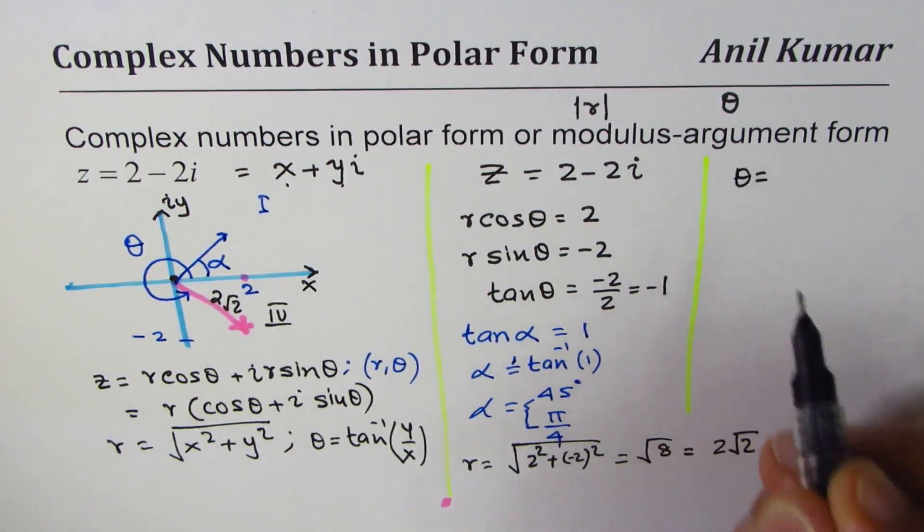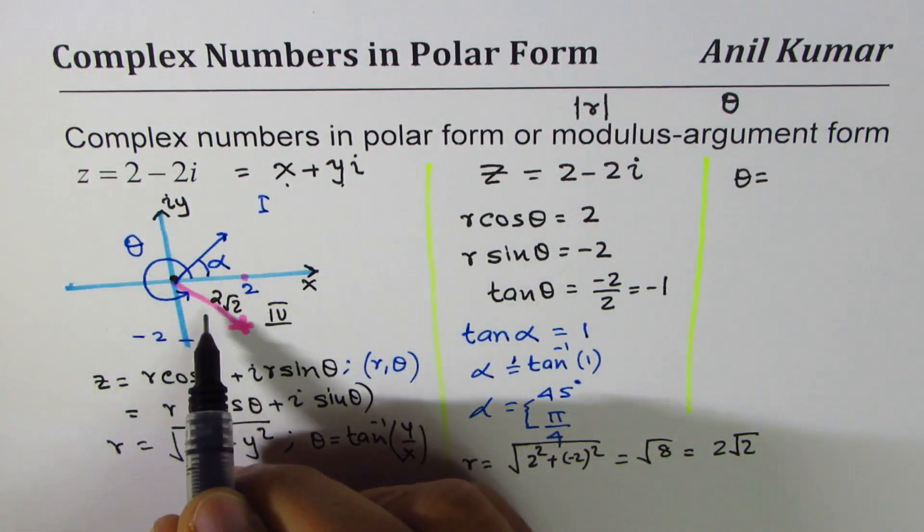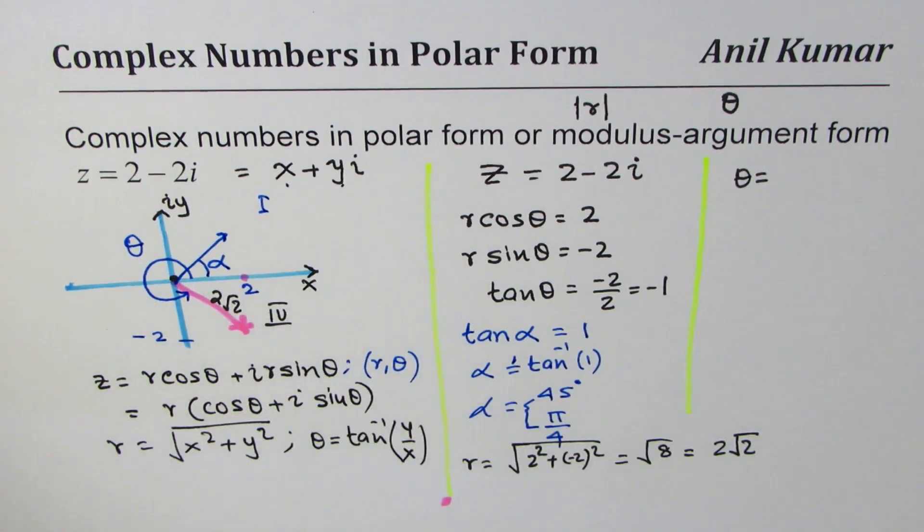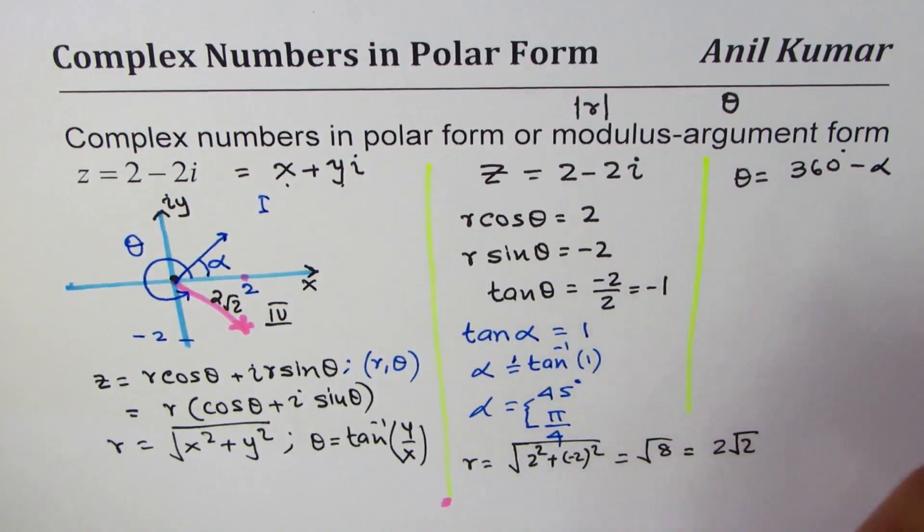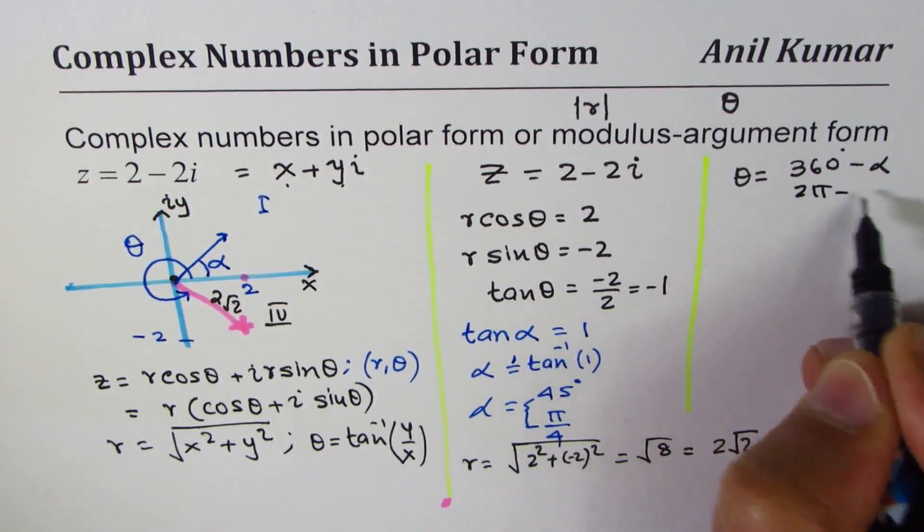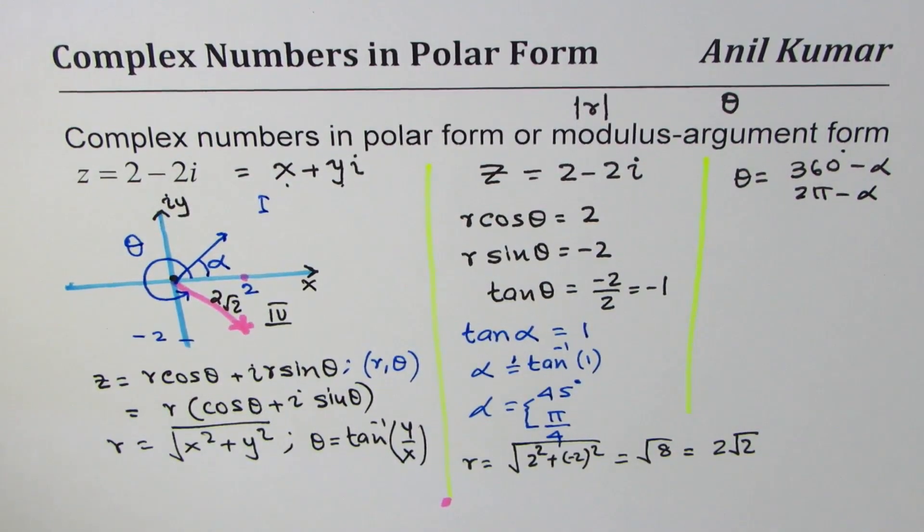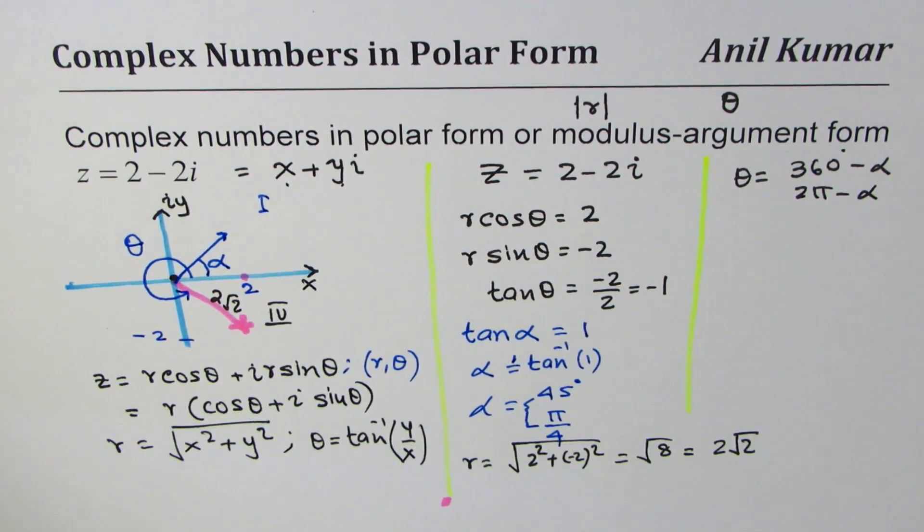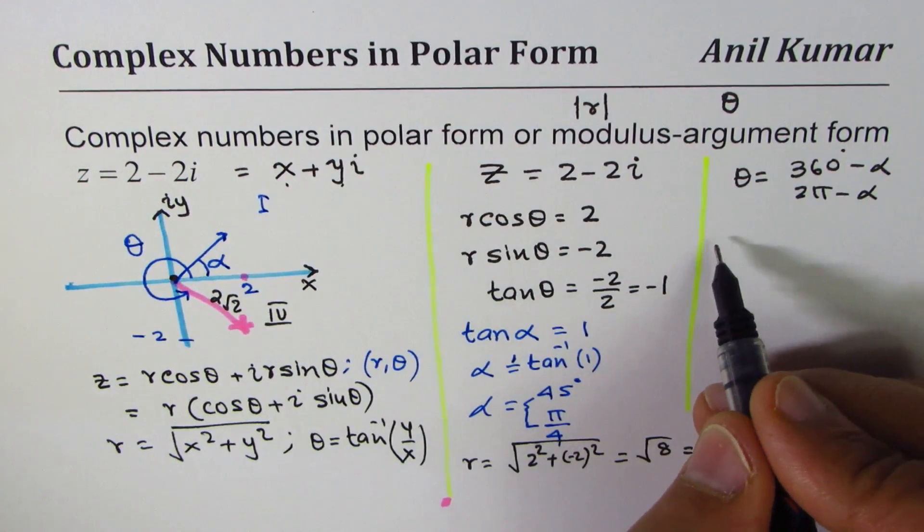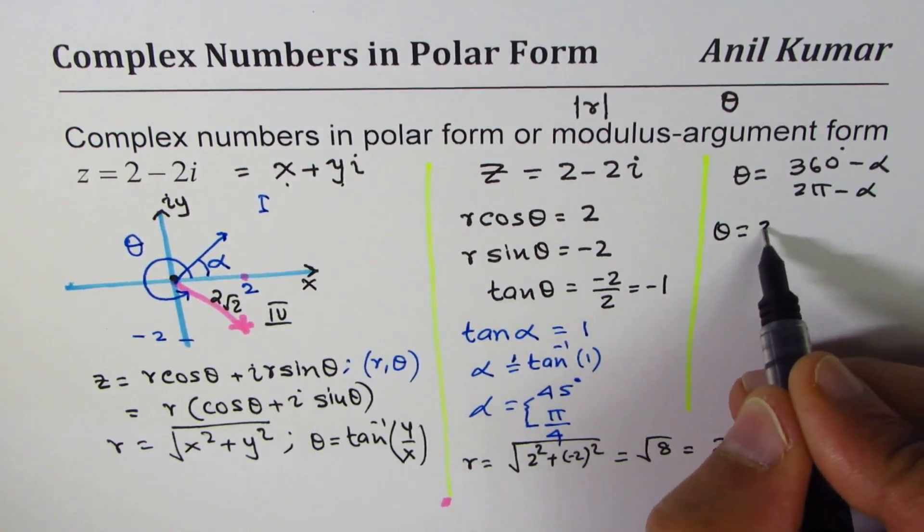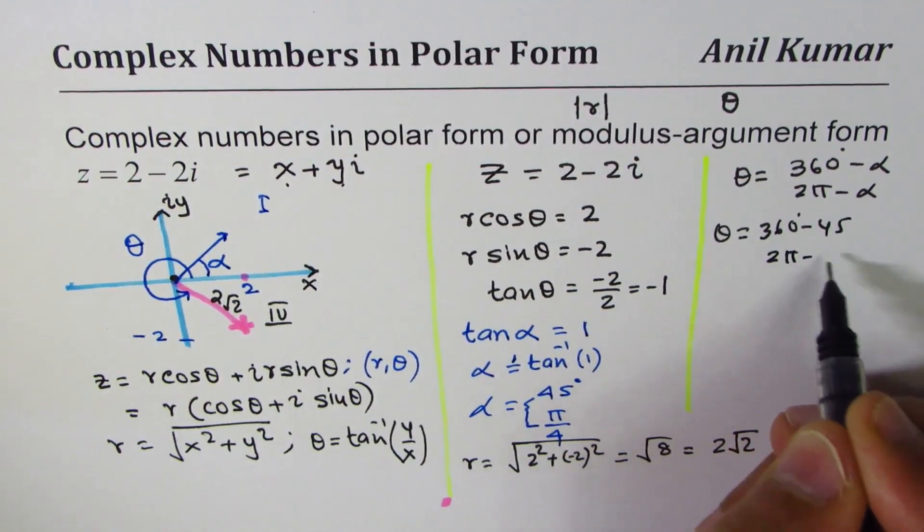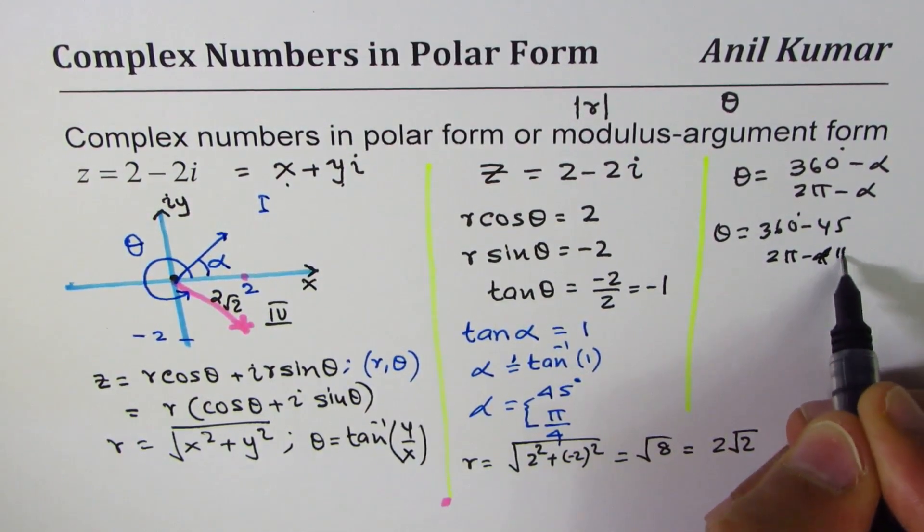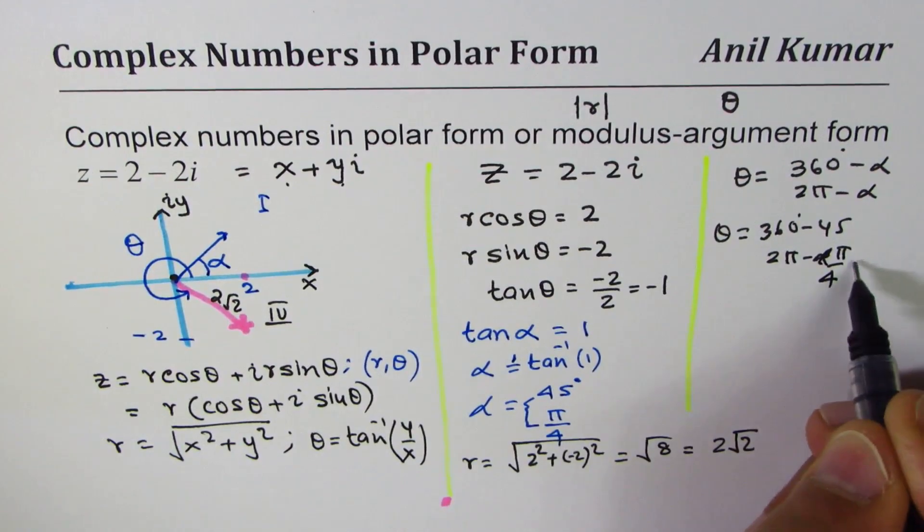Theta is equals to 360 minus alpha. You write this as 360 degrees minus alpha or you could write this as 2 pi minus alpha either way. Choose your units. So in our case theta is equals to 360 minus 45 degrees or 2 pi minus pi by 4.